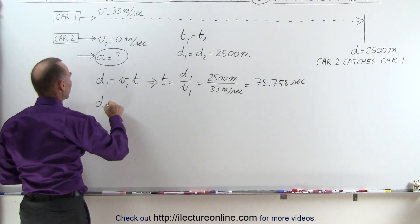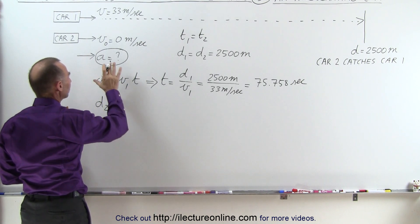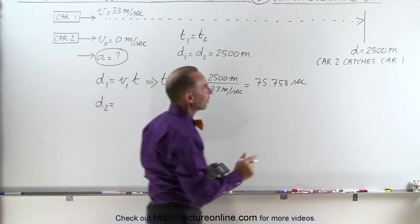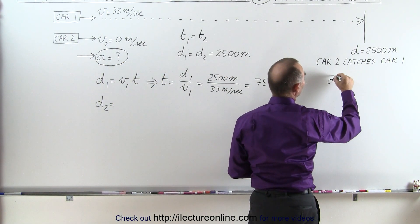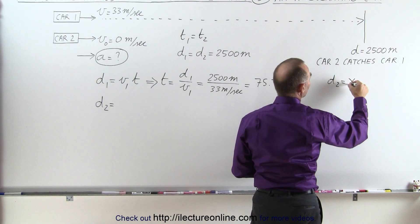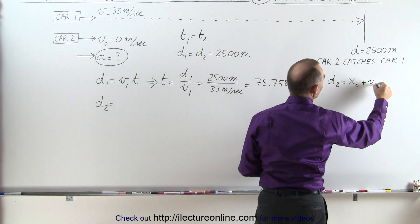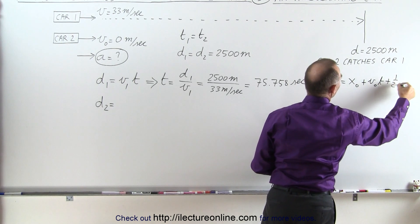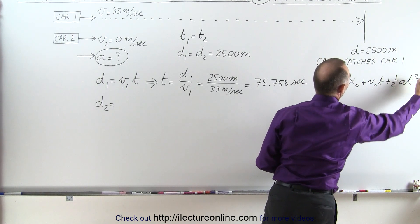Then distance 2, since there is an acceleration, we can say that distance 2, d₂, is equal to the initial distance plus the initial velocity times time plus one half the acceleration times time squared.